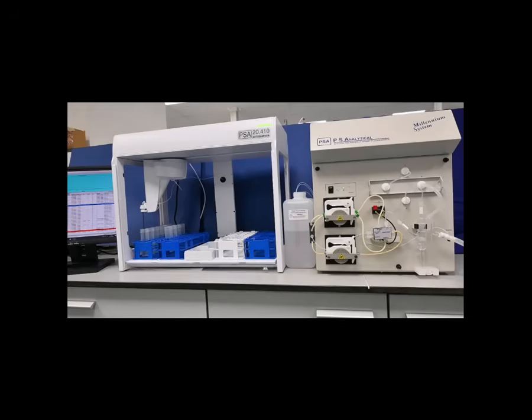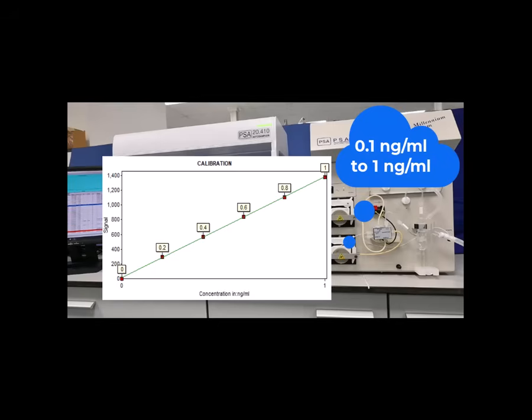Sample concentrations are quantified by reference to calibration prepared from a series of standard mercury solutions. Linear calibrations up to 1 ppm can be obtained. Typically, calibrations are performed from 0.1 nanogram per ml to 1 nanogram per ml.